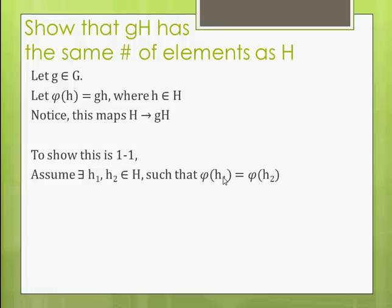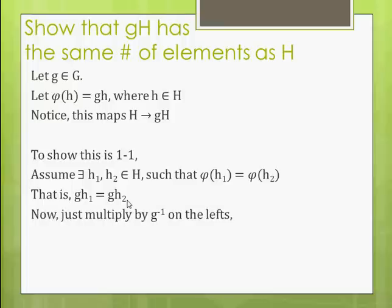So we have φ(h₁) equals φ(h₂). These are two elements in our subgroup. Well, φ(h) is gh, right? So φ(h₁), that's gh₁. And φ(h₂), that's gh₂. And now we know G is a group, so g inverse exists. So we just multiply by g inverse on the left, on the left, right here and right here. And after we do that, we get h₁ equals h₂. That's it.